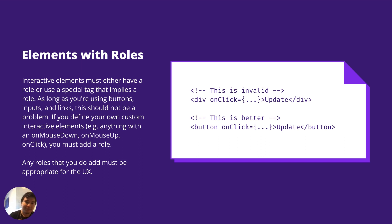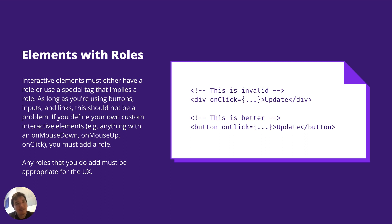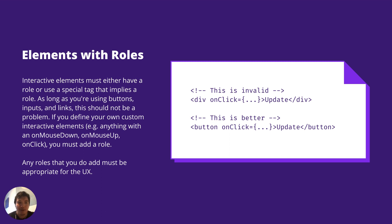Elements with roles: interactive elements must either have a role or use a special tag that implies a role. As long as you're using buttons, inputs, and links, this is almost definitely not a problem. But if you're defining your own custom interactive element — anything with an onMouseDown, onMouseUp, or onClick — you must add a role, and any role you add must be appropriate for the UX. Don't override a button's role with 'role=none' or 'role=presentation' unless it truly is presentational. Generally, stay away from divs for interactive elements.